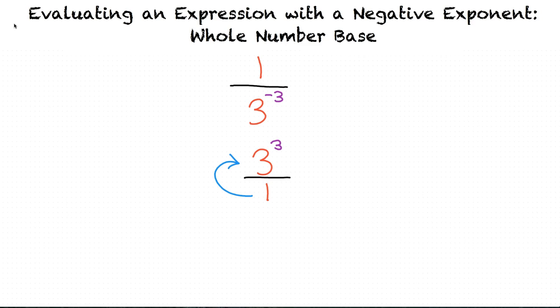From there, we just follow the rules of exponents to cube the 3 in order to get rid of the exponent. This gets us our final answer of 27. Perfect.